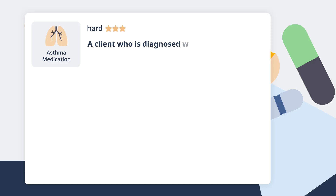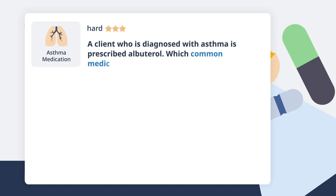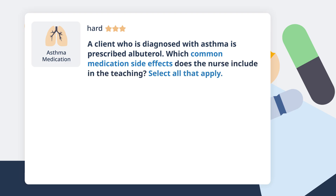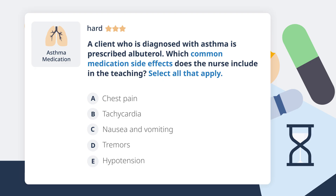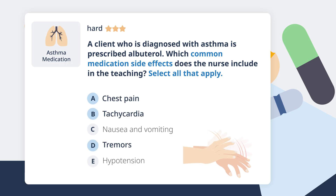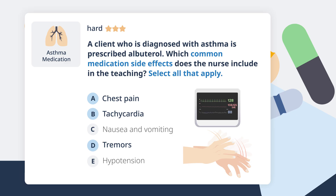A client diagnosed with asthma is prescribed albuterol. Which common medication side effects does the nurse include in the teaching? Select all that apply. Tremors, especially in the extremities, and tachycardia are common side effects of short-acting beta-2 agonists such as albuterol or levalbuterol. Some clients may have chest pain after using the medication. Some clients may perceive tachycardia as a pounding or irregular racing heartbeat.